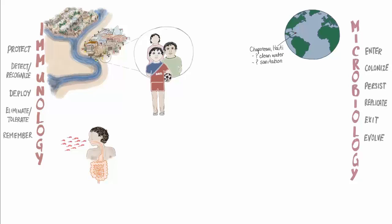Determined to protect the health of his family, Philippe's older brother Jan had left home a year ago to study medicine at the University of Haiti in Port-au-Prince — the first boy in his village to attend medical school. On a visit home last April, just after the spring rains had begun in Haiti, the two brothers were playing soccer when Philippe took a drink from a nearby communal tap.